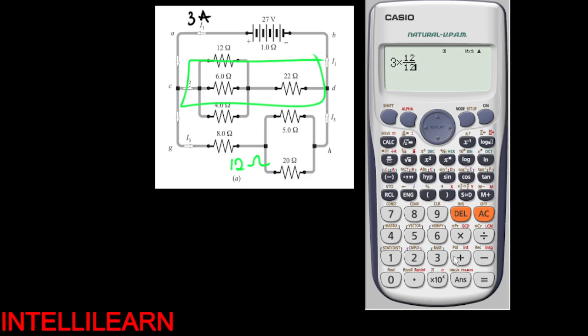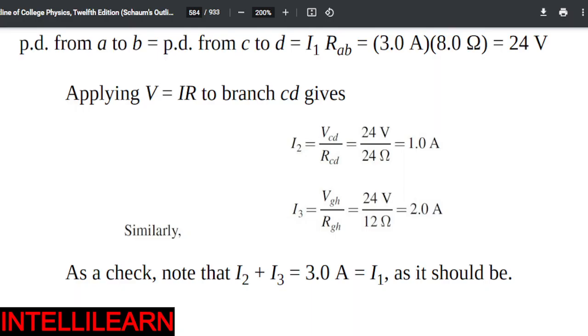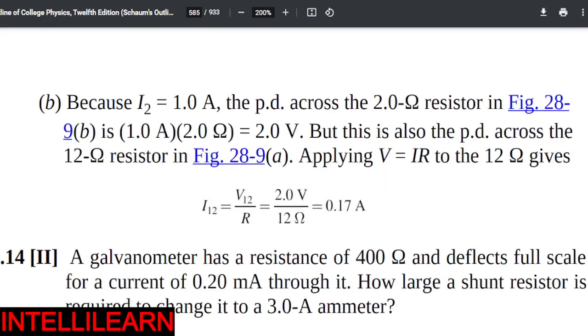I2 - the 12 plus their total which is A - so that's 1. So this should be 1 Ampere. So remove 1 from 3, you're left with 2 Amperes. So I2 should be 1 Ampere, I3 should be 2 Amperes. I2 is 1 Ampere, I3 is 2 Amperes - so that is correct.